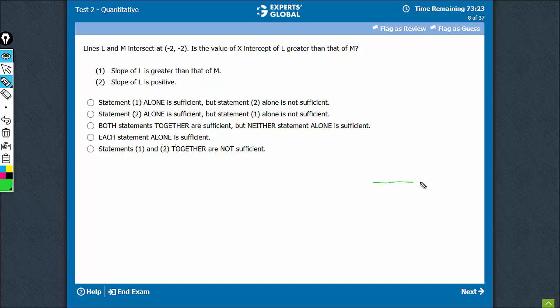The lines L and M are intersecting at C, so they are intersecting somewhere here. Now, statement 1 says slope of L is greater than slope of M.